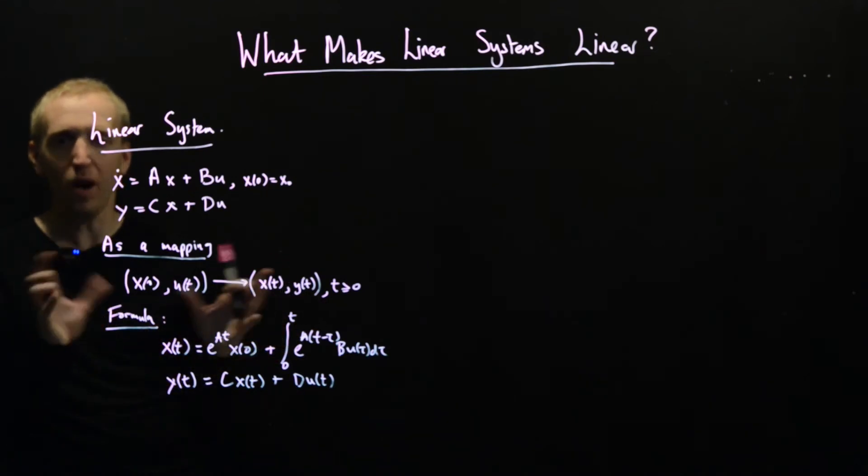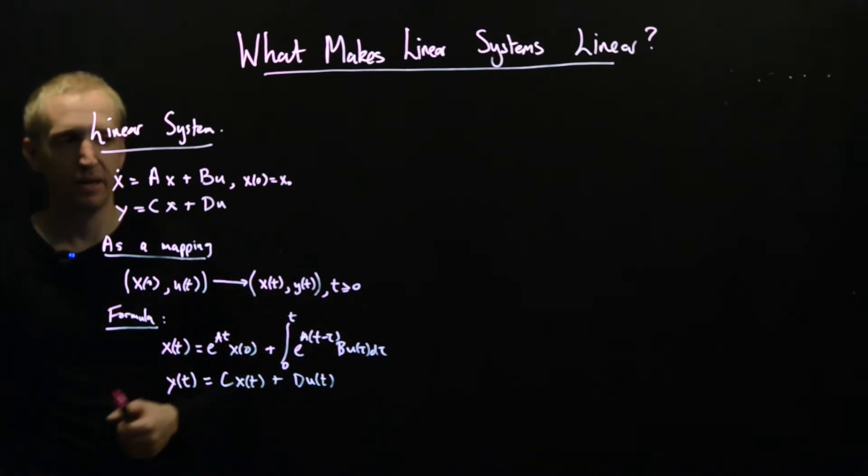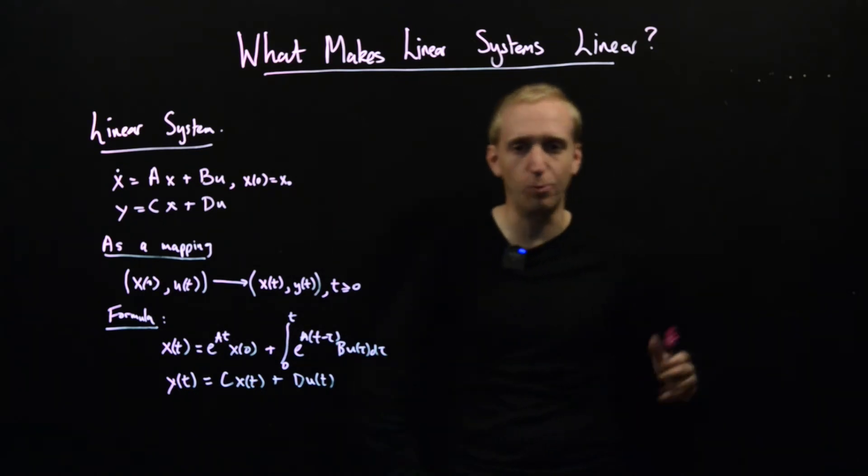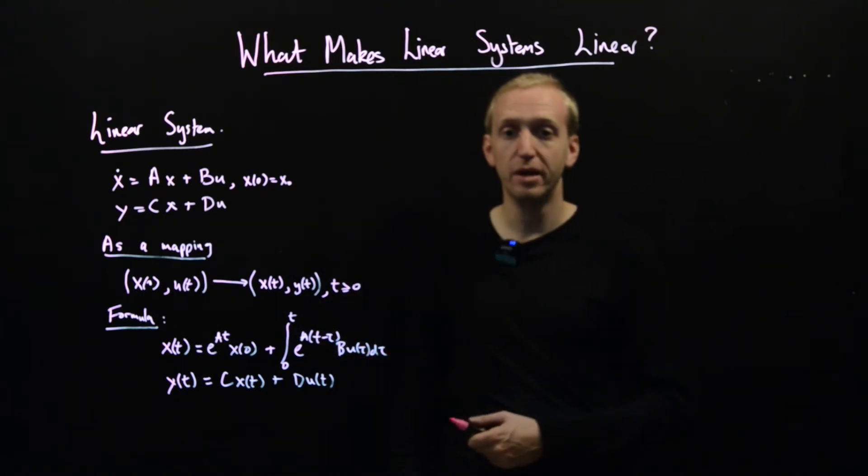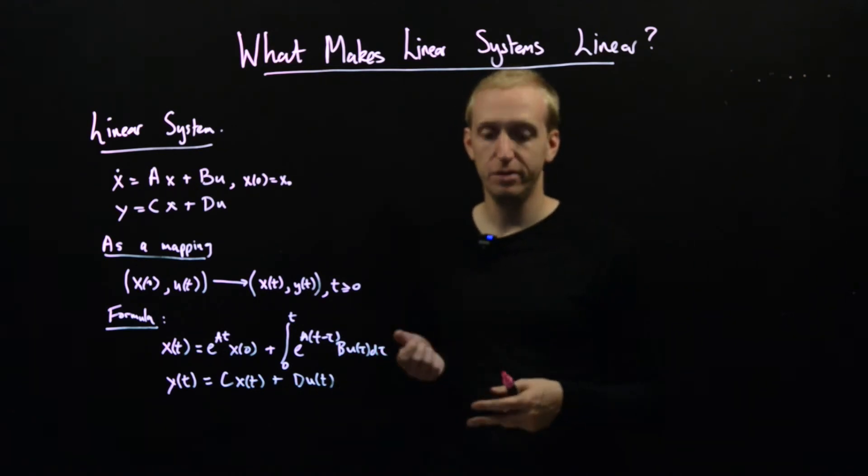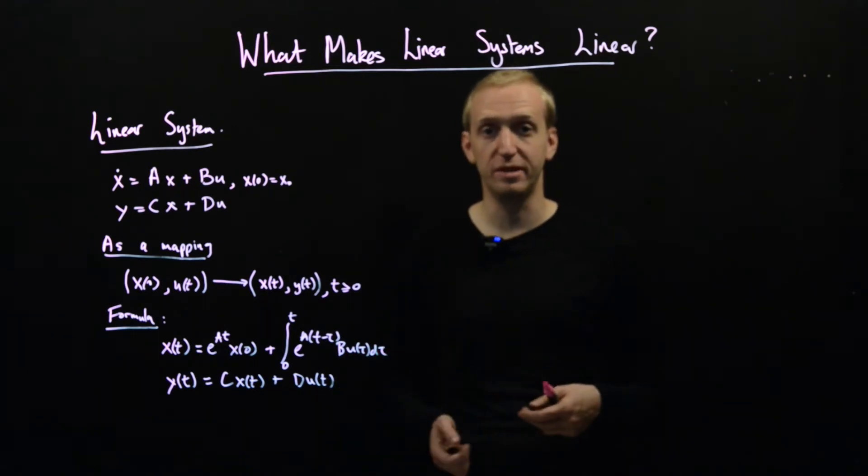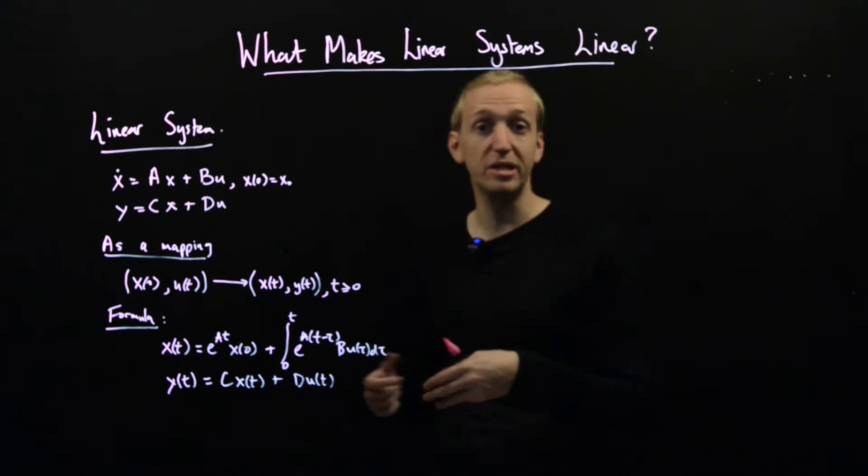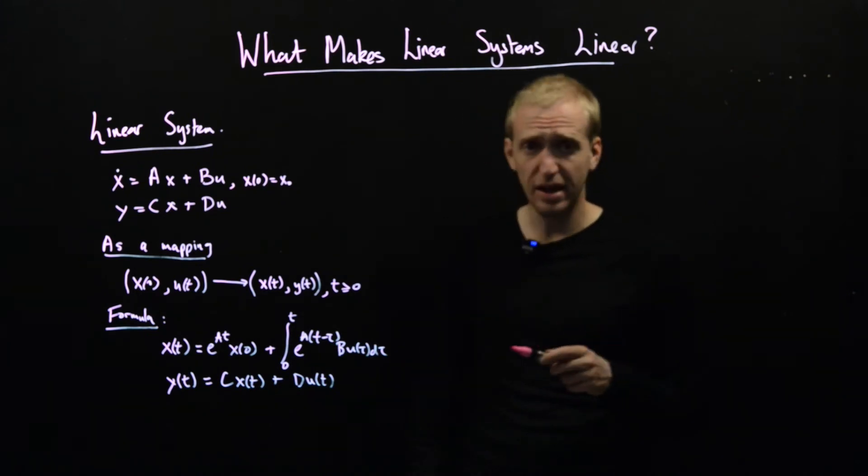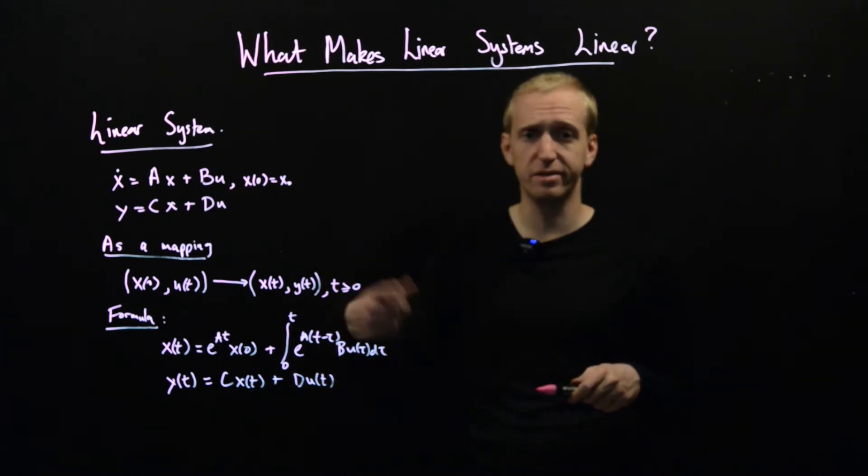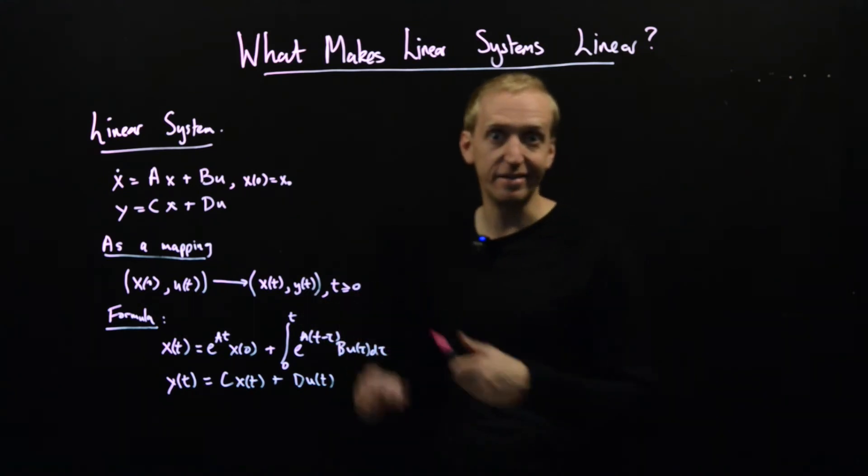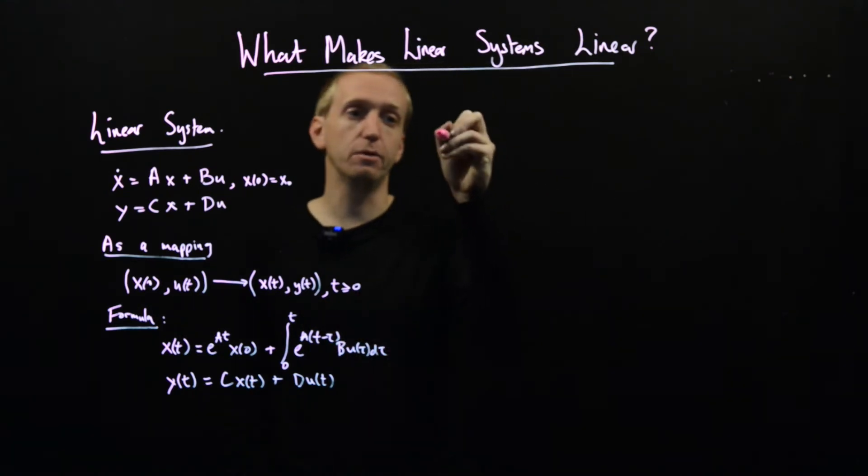But why are these systems called linear? Now I don't know if you remember, but probably way back a long time ago you were told that systems are linear if they satisfy two properties and those properties were maybe called superposition and some kind of scaling. So what does that mean and why does the linear system satisfy linearity? What is making it linear? So let's look at property one.